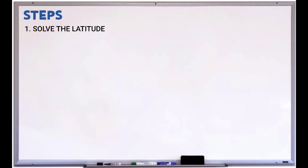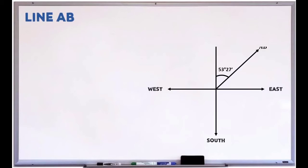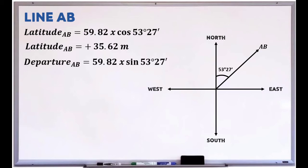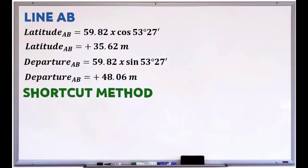To solve the error of closure, the first step is to solve the latitude and departure. Line AB lies in the first quadrant, so the latitude and departure are both positive. The latitude of line AB equals 59.82 × cos(53°27') = positive 35.62. The departure of line AB equals 59.82 × sin(53°27') = positive 48.06.